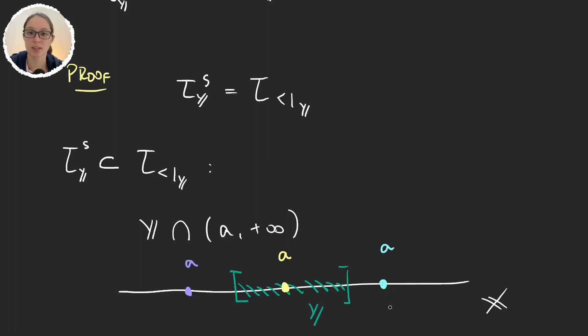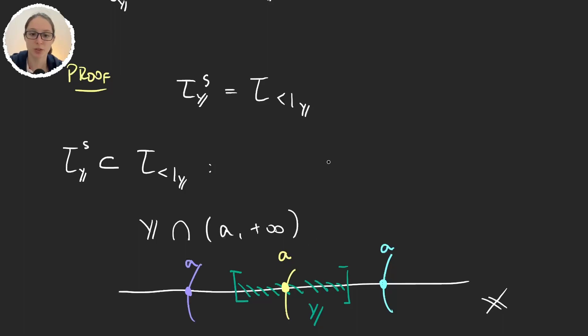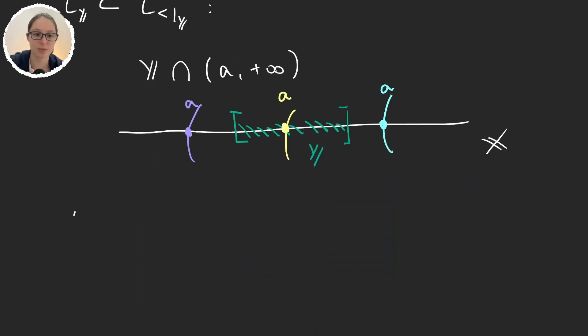In these three cases, we would have the open ray in that direction. So, what is Y intersection (A, infinity)? Well, if we were in the purple situation, we would have that the intersection of all this with Y is going to be our set Y.